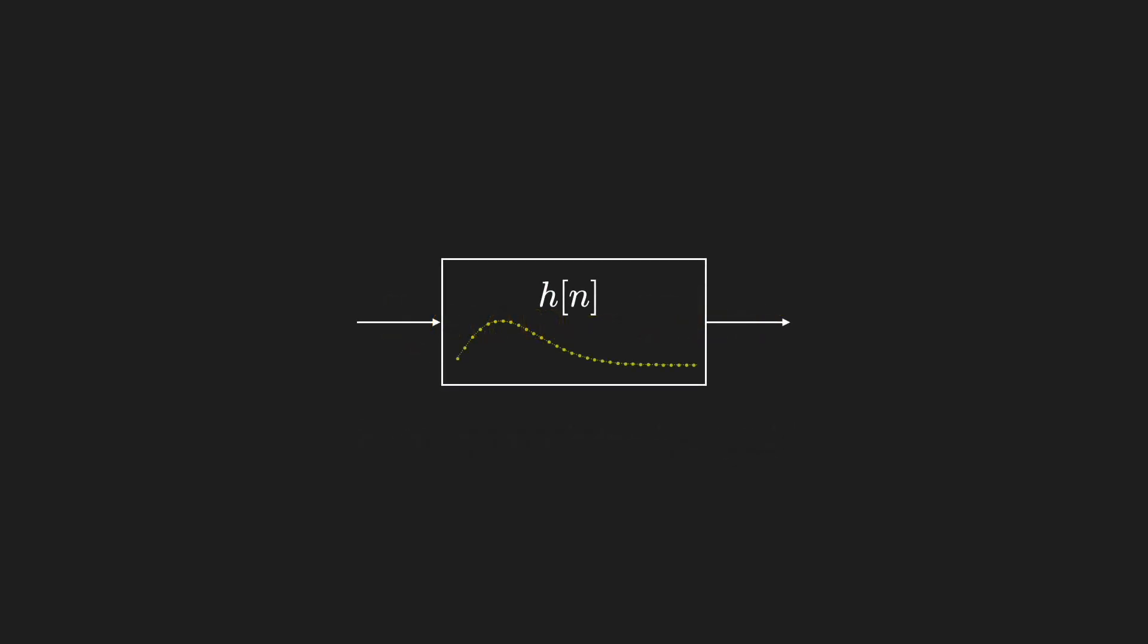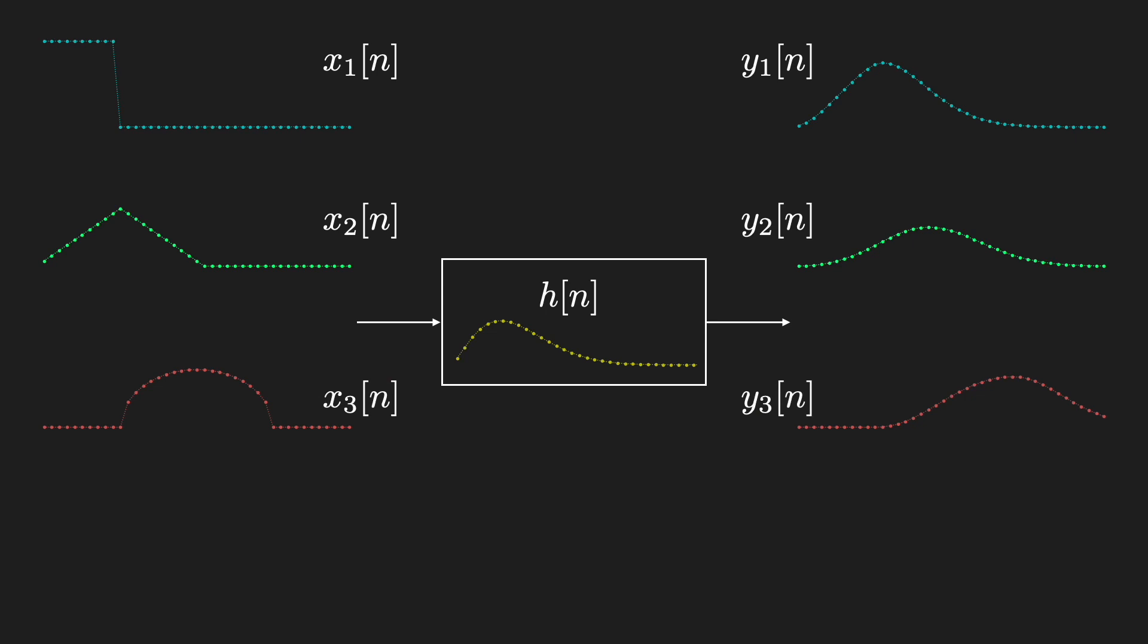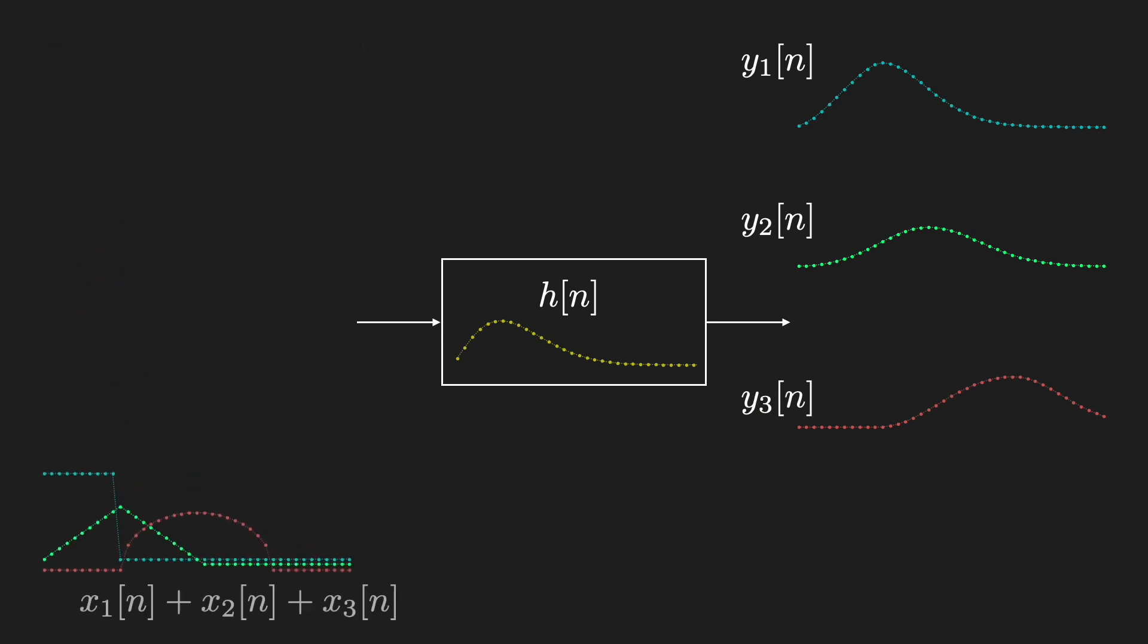Let's say we have a system, H of n, that for a particular input signal gives this output. Let's call this input x1 and this output y1. For a different input x2, there's a different output y2. And for a third input x3, we get another output y3. Now, what if we add together x1, x2, and x3 and input that sum?